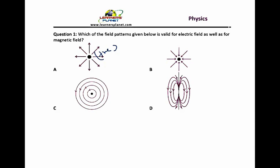Similarly, if you look at option B, the field lines they are coming radially inward. So it has to be a negative charge.